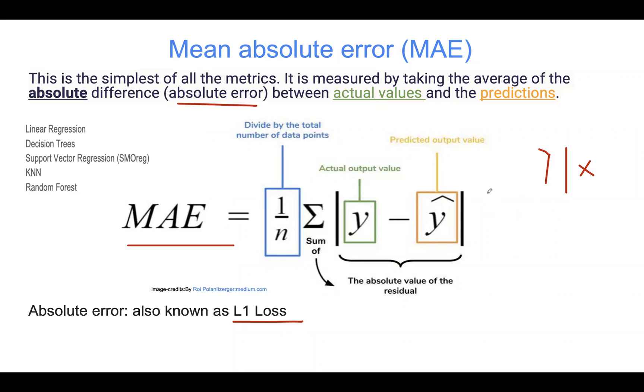One thing to note when using mean absolute error is that it's probably not a good metric when you have a lot of outliers. When outliers are prominent, then the performance might not be very good. So, you might want to do some data processing there. Another thing to keep in mind is that mean absolute error doesn't penalize large errors.